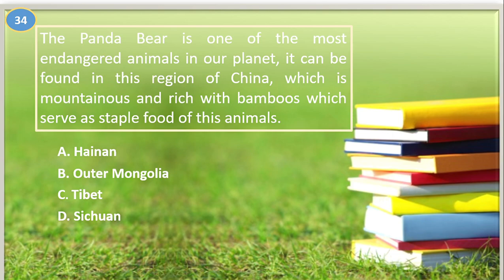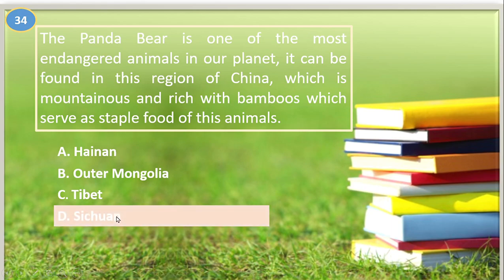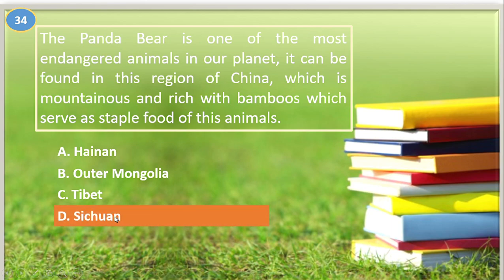Number thirty-four. The panda bear is one of the most endangered animals on our planet. It can be found in this region of China, which is mountainous and rich with bamboo, which serves as the staple food of these animals: A. Hainan, B. Outer Mongolia, C. Tibet, D. Sichuan. The answer is Sichuan, China.